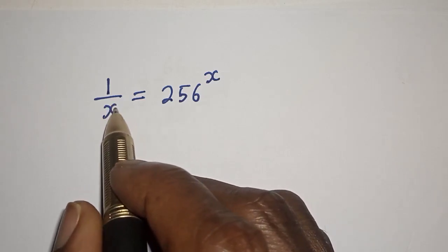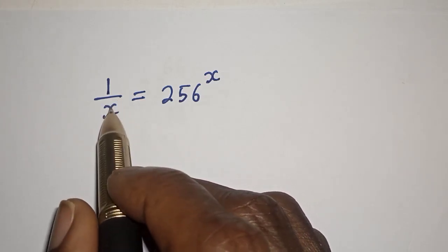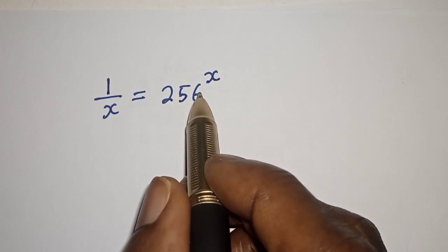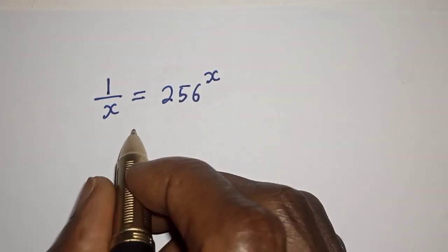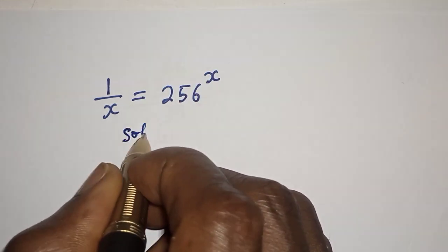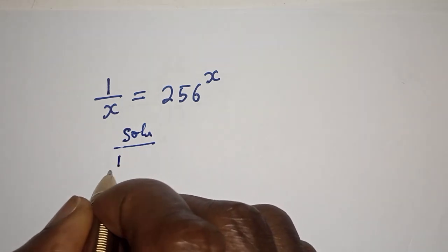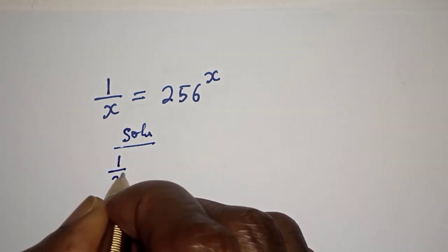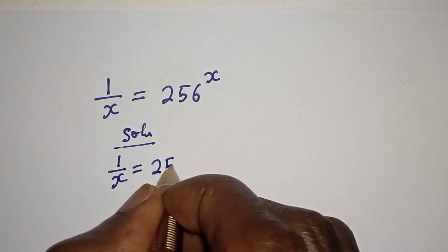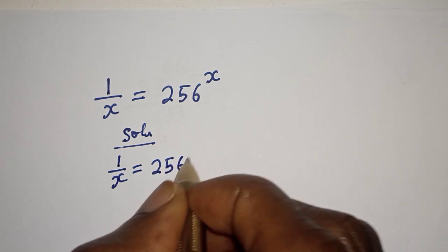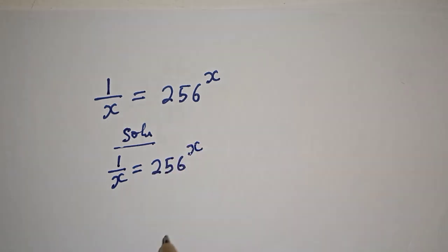Hello. How to solve for s from this equation: 1 over s is equal to 256 to the power of x.